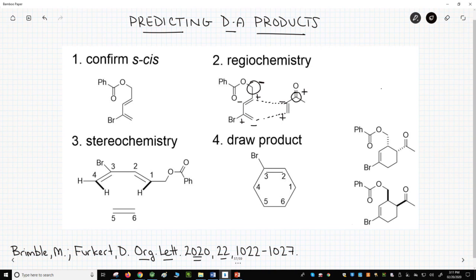Step 3: Endo-exo stereochemistry. For this step, I draw the diene with perspective. Now, float the dienophile, which is incomplete, underneath the diene.